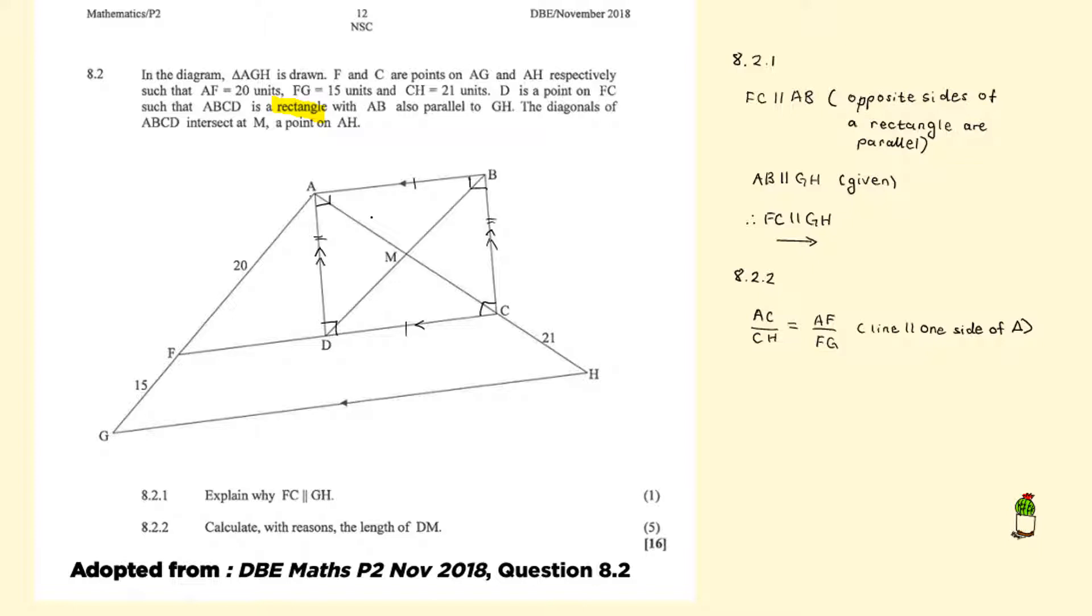AC to CH is in the same proportion as AF to FG. And this is because we have a line which is now parallel to one side of the triangle. So AC is going to be forming part of this triangle over here. AC is a diagonal line of the rectangle.